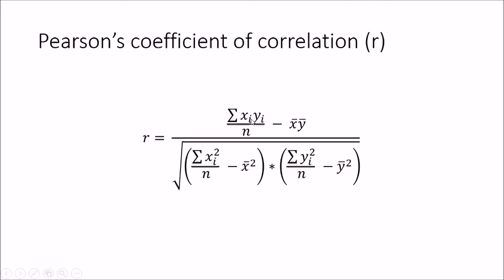So r is equal to the deviation of x and y divided by n — the total number of pairs — minus x-bar and y-bar, which are the mean values of x and y. Along with that we have two components which give the deviation of x and y values together. By substituting values into this equation we can find the coefficient of correlation. Pearson's r can only take values ranging from minus 1 to plus 1.